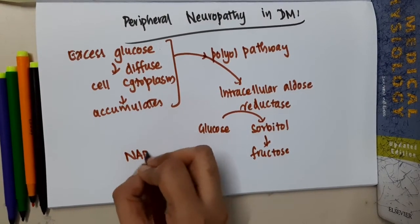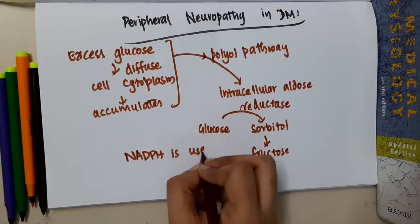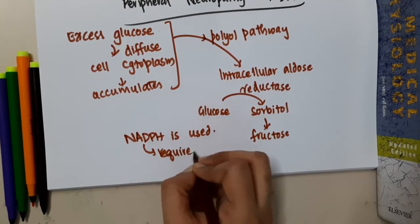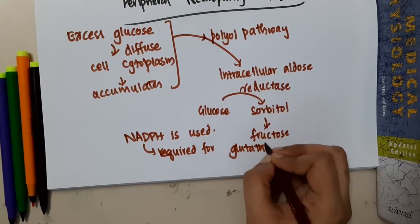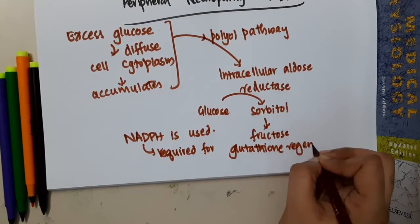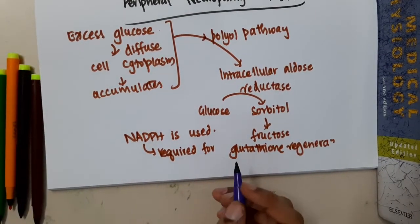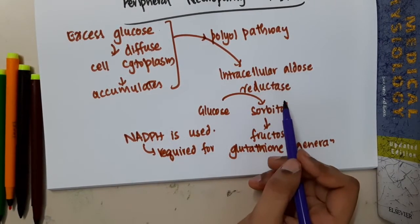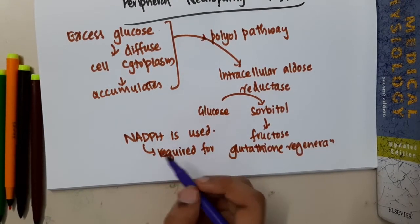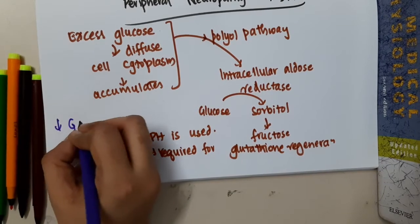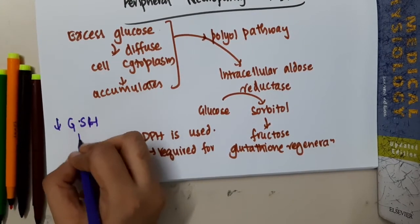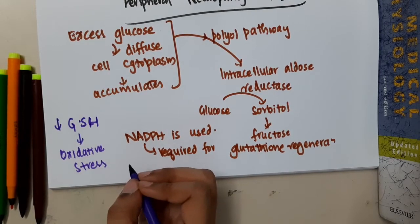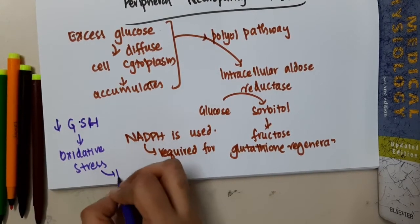During this process, NADPH is used up. This NADPH is normally required for glutathione regeneration. Because NADPH is now absent, glutathione is not regenerated, leading to decreased glutathione levels. This decreased glutathione results in oxidative stress, which ultimately leads to peripheral neuropathy in diabetes mellitus.